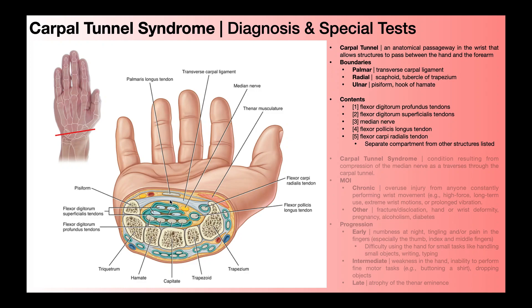Let's now look at the things contained within the carpal tunnel. Numbers 1 and 2 are tendons of flexor digitorum profundus and flexor digitorum superficialis — the deeper ones are for profundus, the more superficial ones are for superficialis, four of each, so eight total. Then we have the median nerve, which is incredibly important for our discussion on carpal tunnel syndrome — that's right here in yellow. Then we have the tendon of flexor pollicis longus. Sometimes they'll include the flexor carpi radialis tendon, though it's not actually within the carpal tunnel proper — it's within a small tunnel embedded within the transverse carpal ligament.